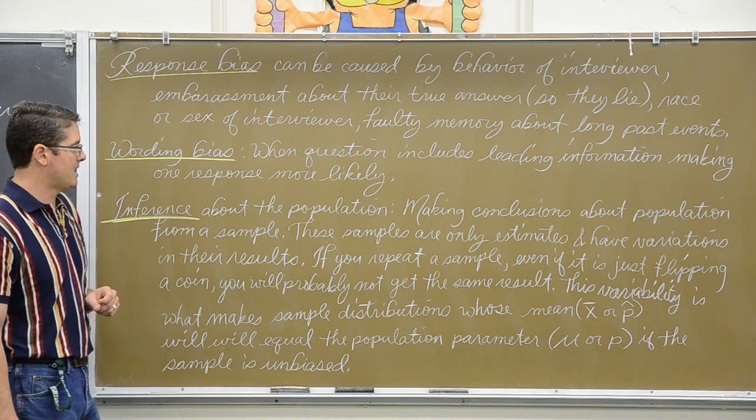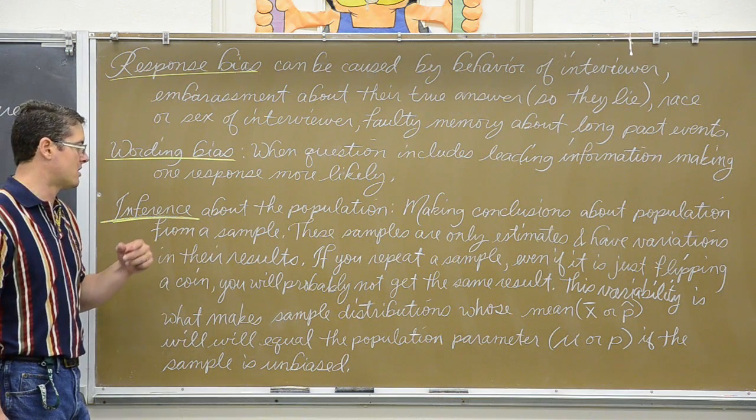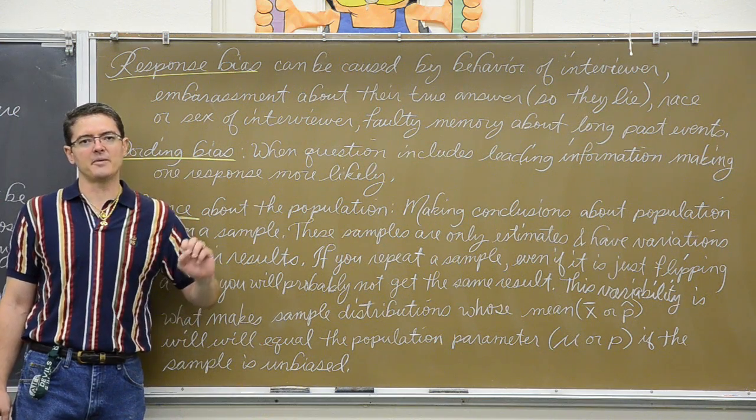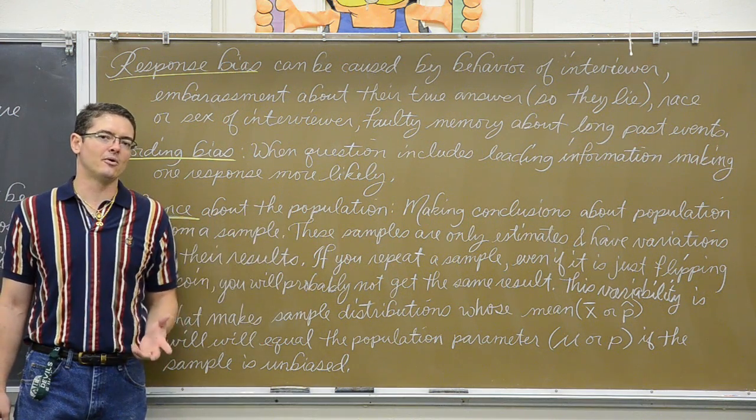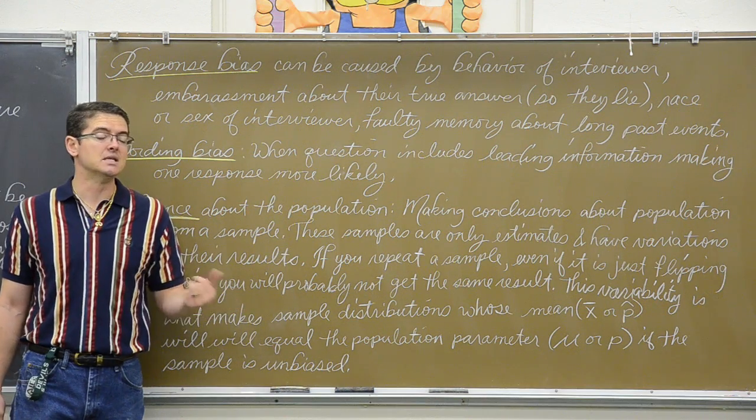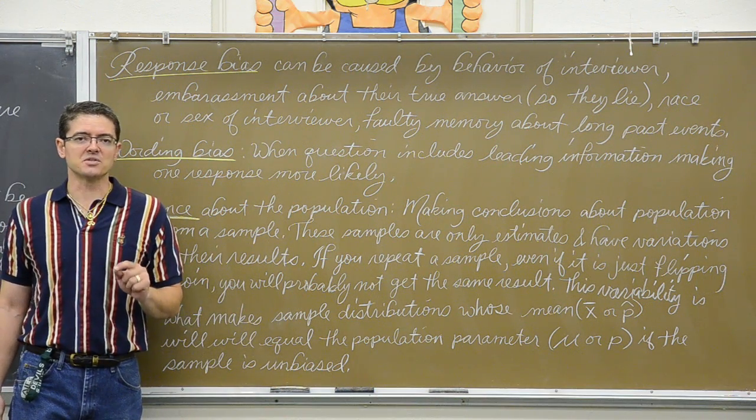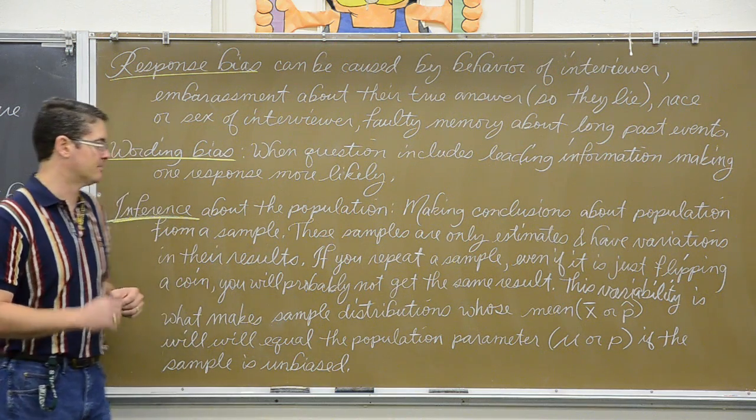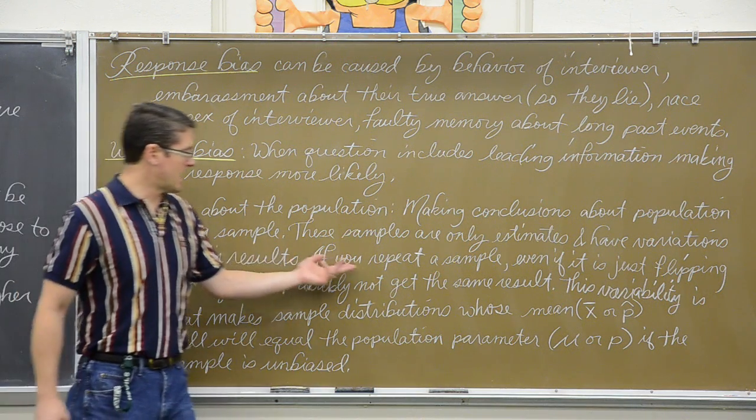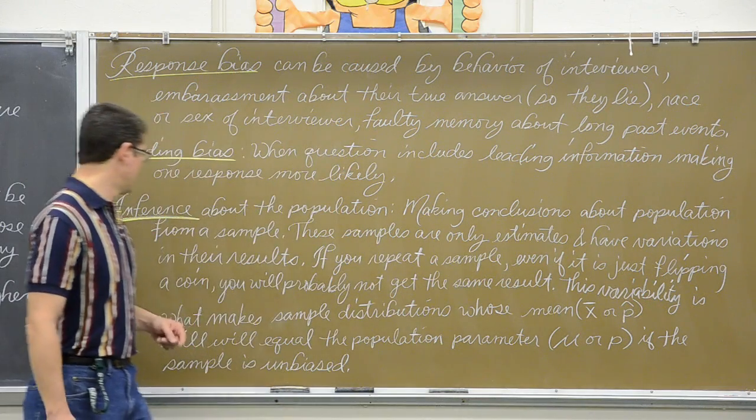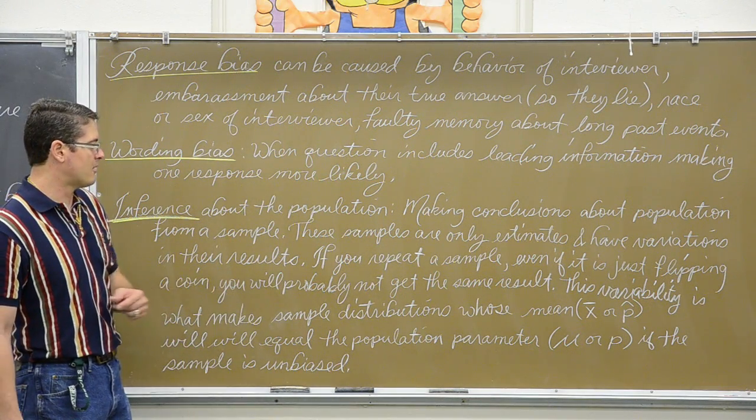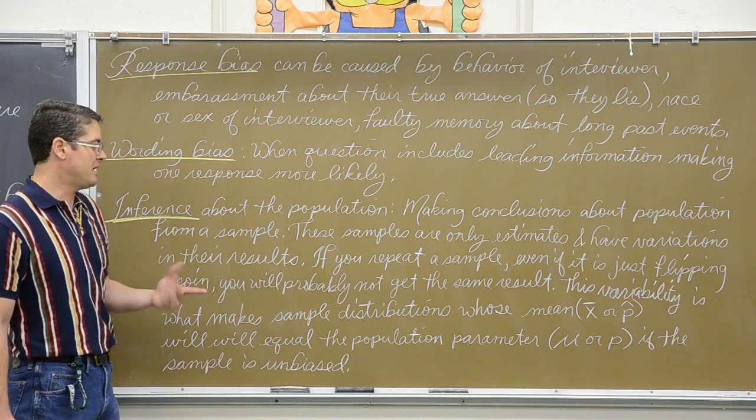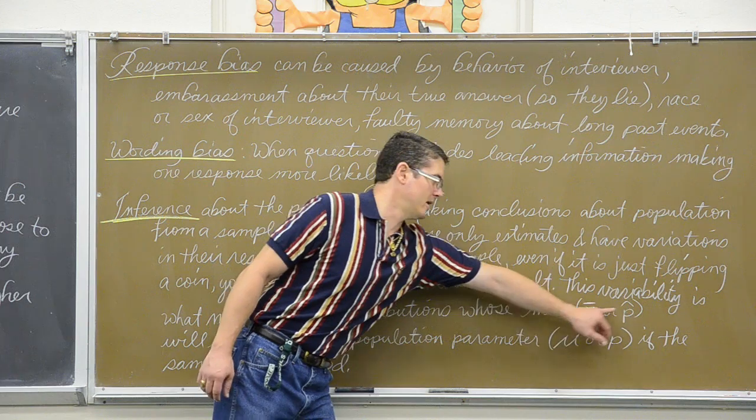These samples are only estimates and have variations in their results. If 40% of the people in a local area shop at a certain grocery store, if I go ask 100 people, hey, you shop at store X, you are not going to get exactly 40%. You are going to get around 40% because you are only sampling a small portion of the population. And not quite a survey, but even if you are just flipping a coin, you are going to probably not get the same results twice.